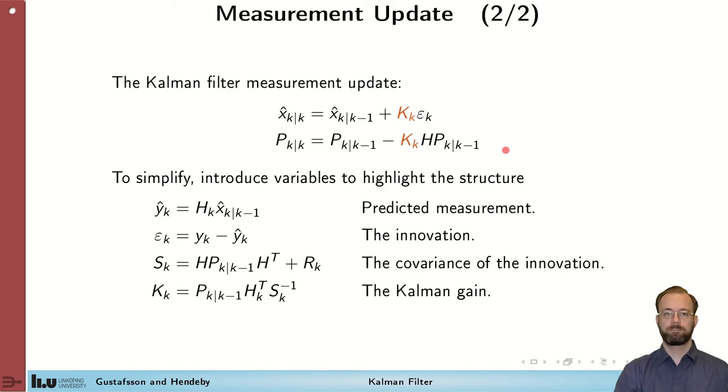Note again that in the prediction step, we expand uncertainty by adding a term to the covariance, whereas in the measurement phase, we cut away uncertainty by introducing measurements. So the covariance is increased during the prediction step and decreased during the measurement update step.